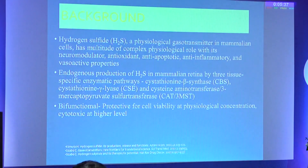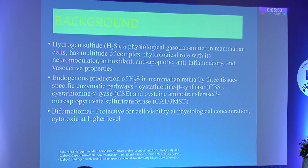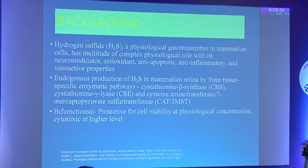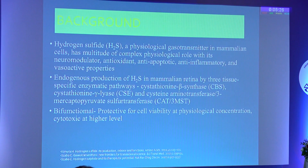This is a research proposal supported by the Indian Council of Medical Research. As background, hydrogen sulfide is a highly active gasotransmitter along with carbon monoxide and nitric oxide, and it has multi-faceted physiological roles in mammalian tissue — as a neuromodulator, antioxidant, anti-apoptotic, anti-inflammatory, and vasoactive agent. Hydrogen sulfide is produced in mammalian tissues including the retina by complex enzymatic reactions through different pathways.